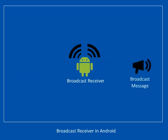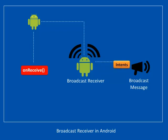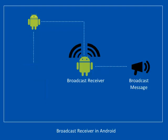The broadcast message arrives at the Broadcast Receiver, and then Android calls its OnReceive method. The OnReceive method is a callback method for Broadcast Receiver. Android passes the intent object containing the message to the OnReceive method from the Broadcast Receiver. The Broadcast Receiver performs its action only when the OnReceive method is executing, and when the OnReceive method returns, the Broadcast Receiver becomes inactive.